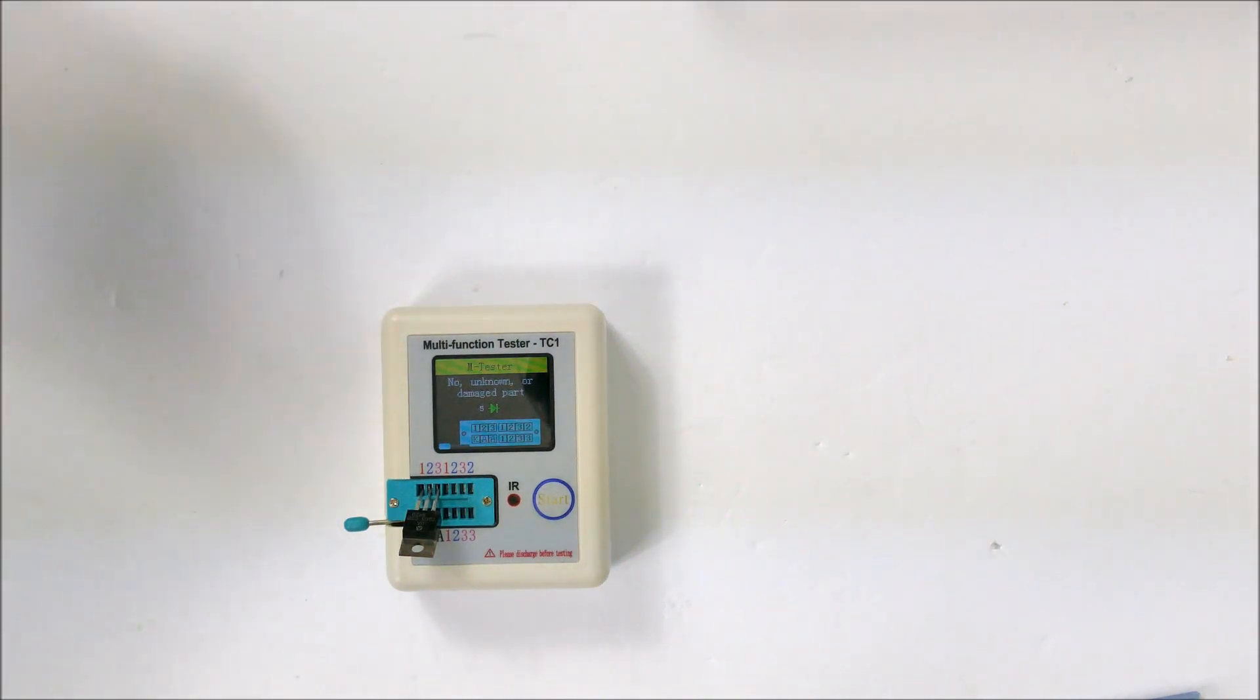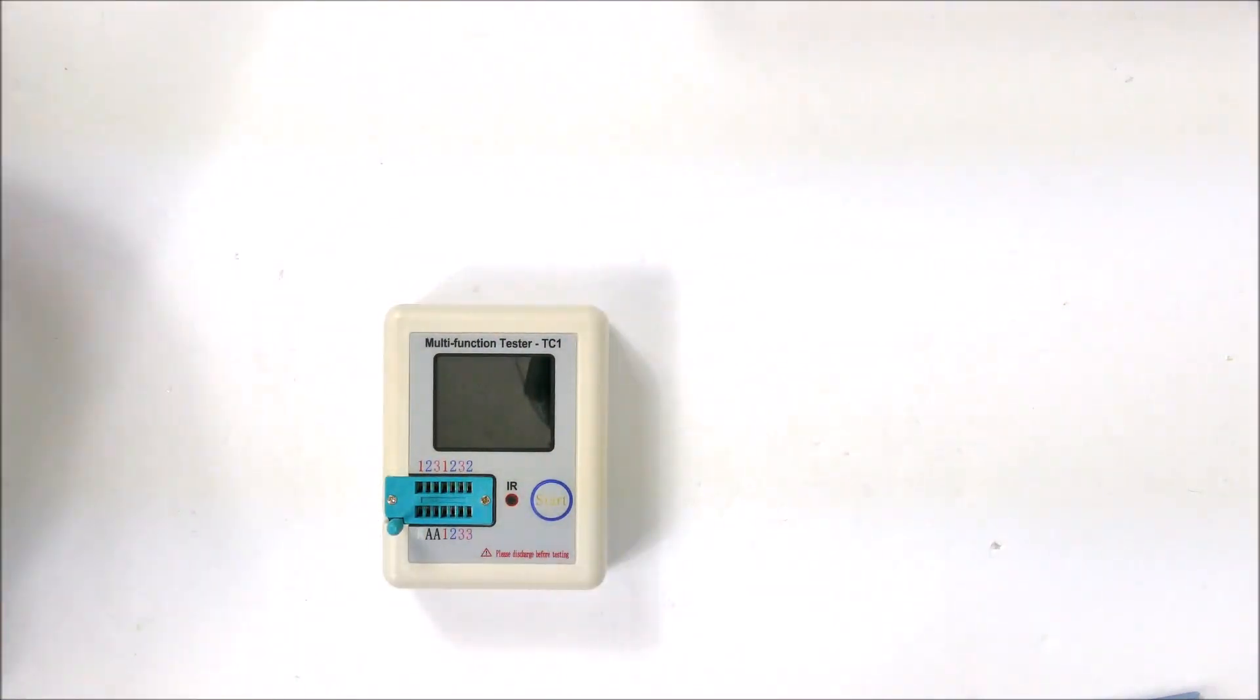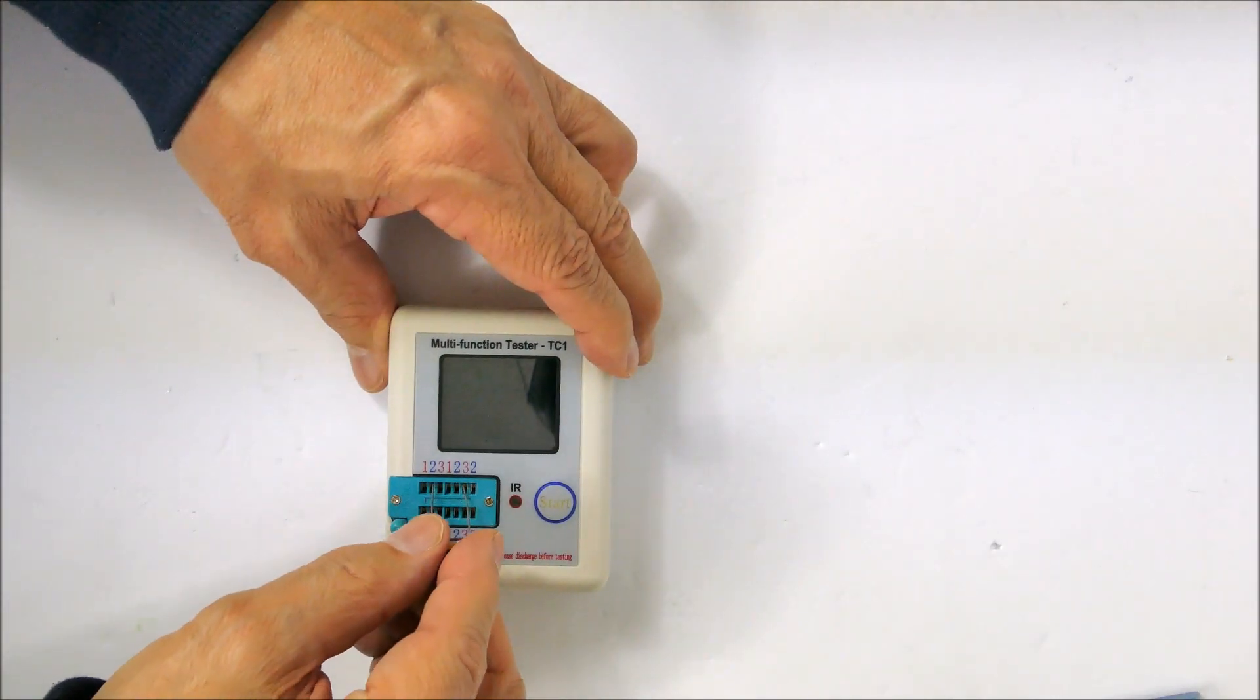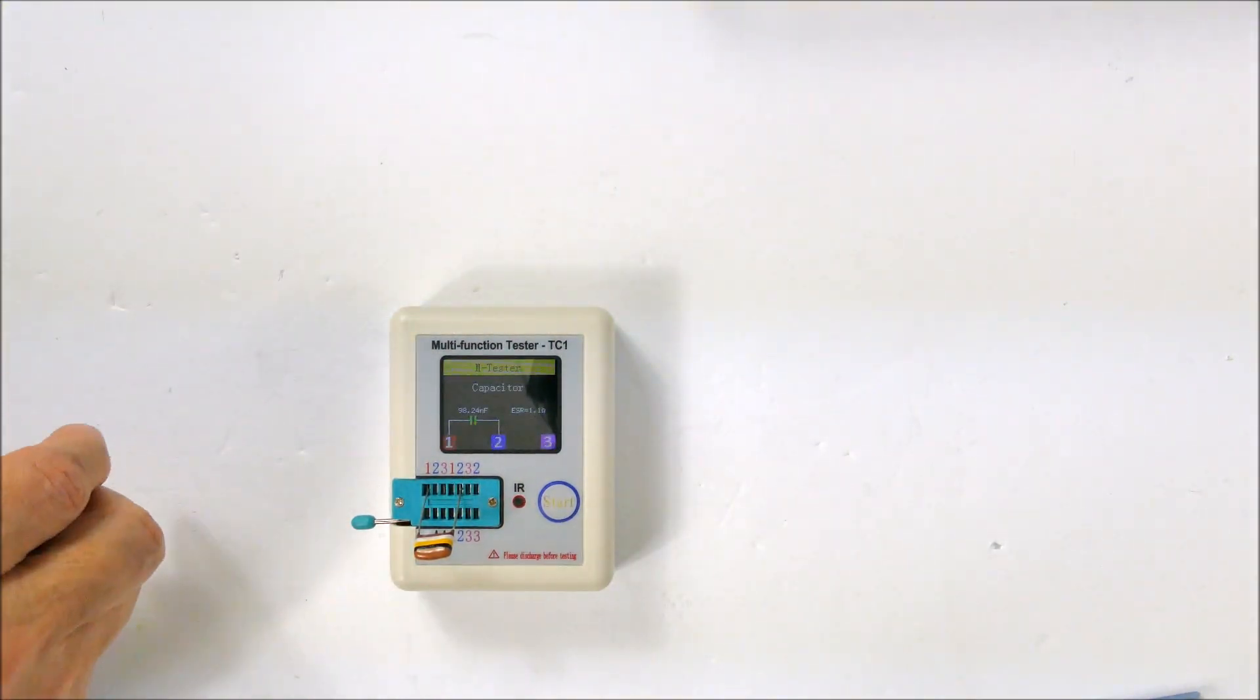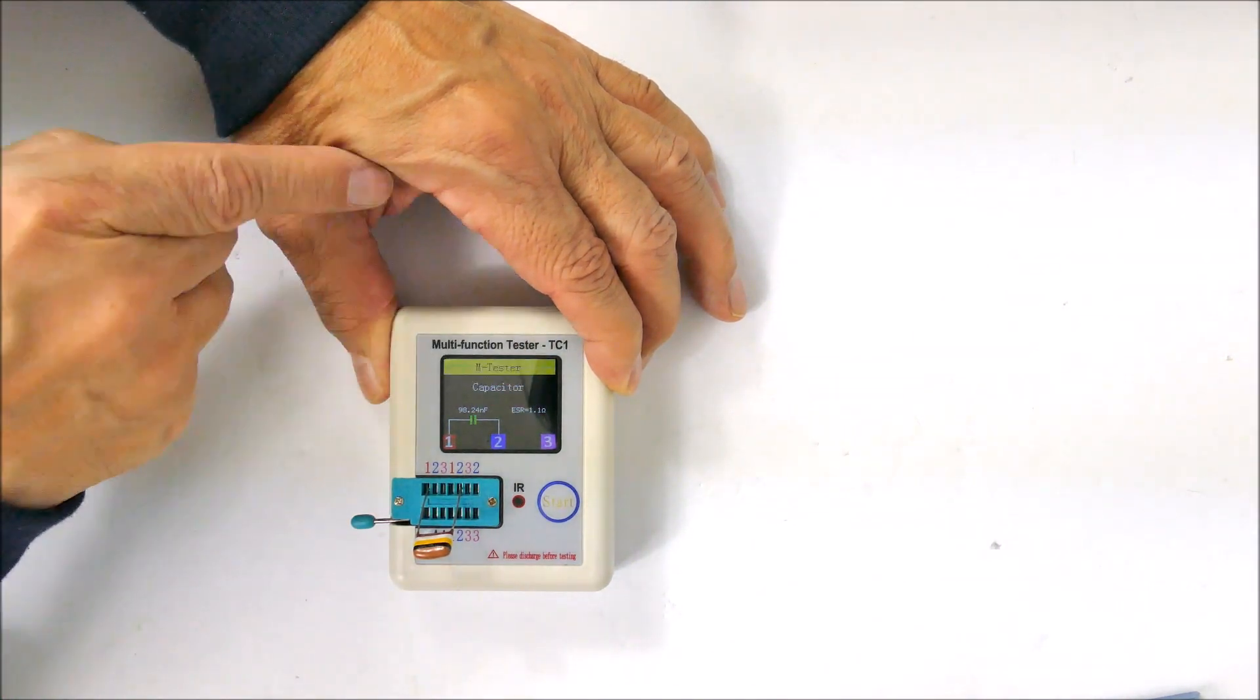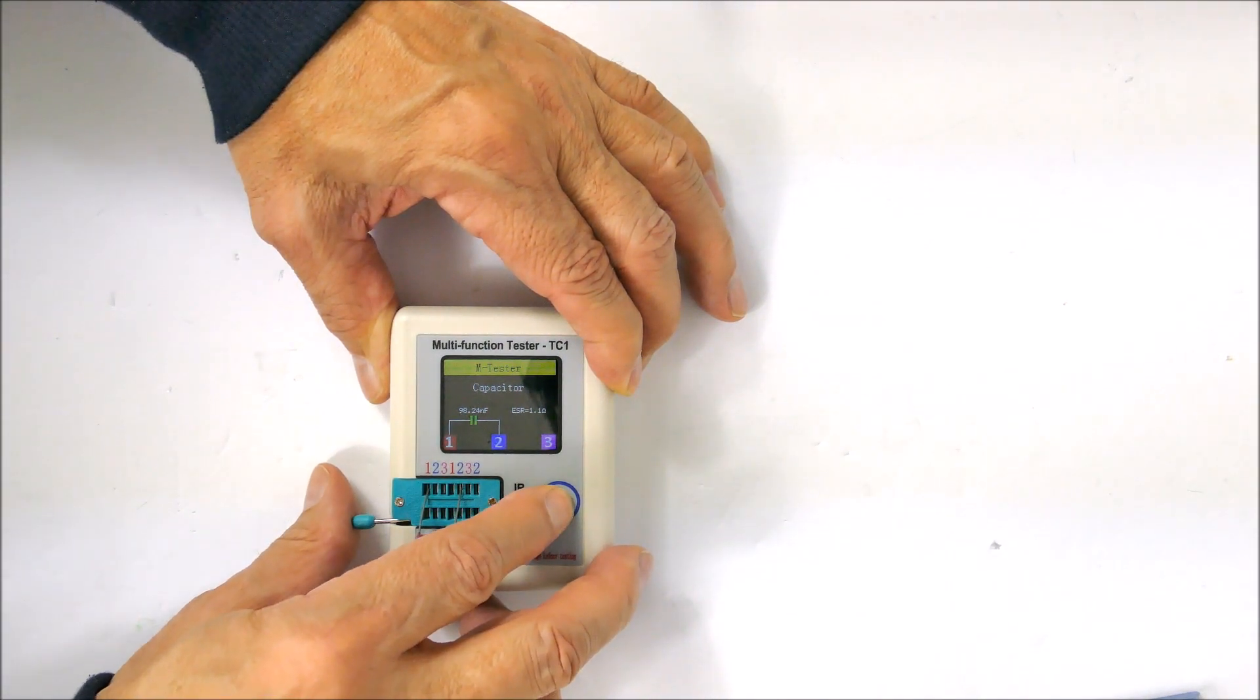It can also test passive components, so let's try this part which is a capacitor. Color code says that it's a 0.1 microfarad. This says it's 98.2 nanofarads, which is kind of cool, very close to being what the color code says and probably within tolerance. It gives you the ESR, 1.1 ohms. This tester actually figures a lot of things out.